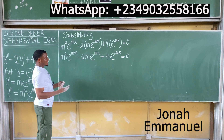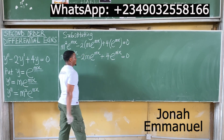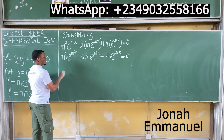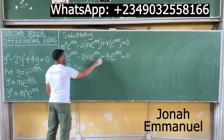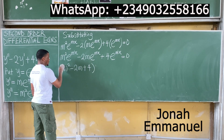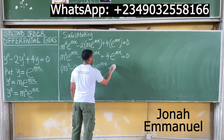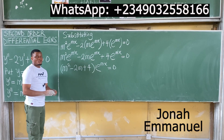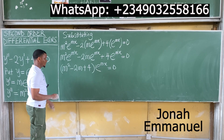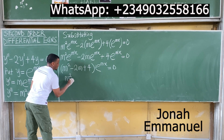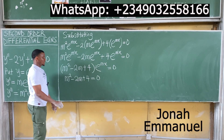Factorize e^(mx) — we're not cancelling it, just factorizing. What remains inside the brackets is m² − 2m + 4, multiplied by e^(mx) equals zero. Since e^(mx) cannot be zero, this gives the quadratic equation m² − 2m + 4 = 0.